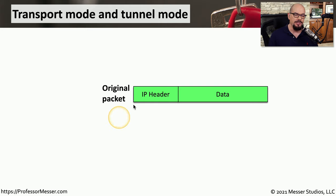If your only concern is the integrity of the data, you may not need to encrypt anything going across the tunnel. In that case, you would only be using the Authentication Header, or AH protocol. This is a hash of the packet and a shared key that is shared between the two IPSec concentrators. It's common to use a hash such as SHA-2, which adds an authentication header to the data being sent. This provides no encryption but does provide data integrity through the hash, guarantees the origin of the data through authentication with the shared key, and prevents replay attacks because sequence numbers are included.